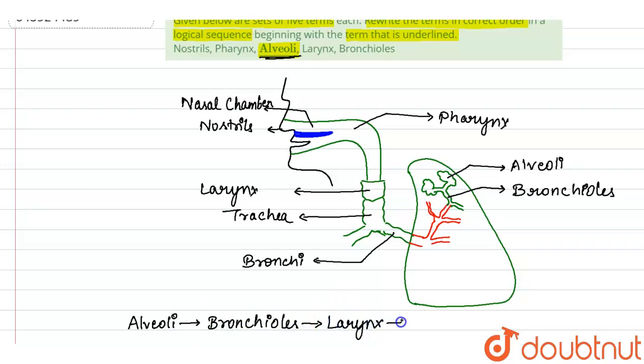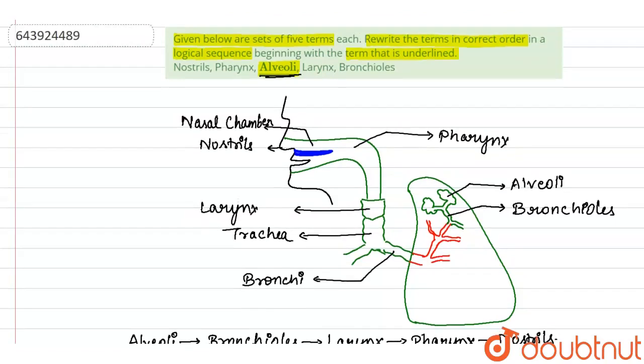Then is pharynx, and at last comes nostrils. So this is the correct sequence. Thank you.